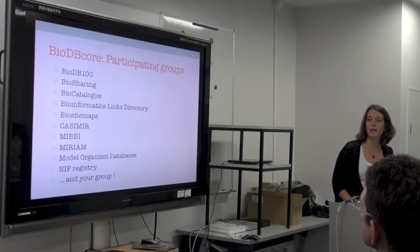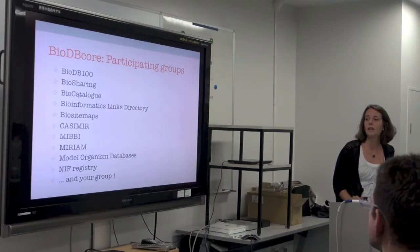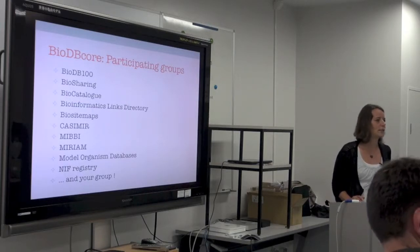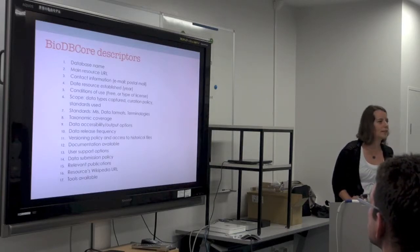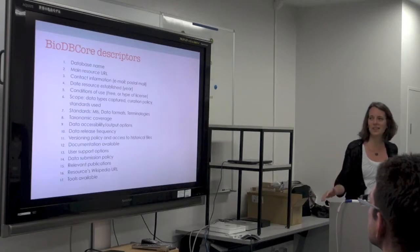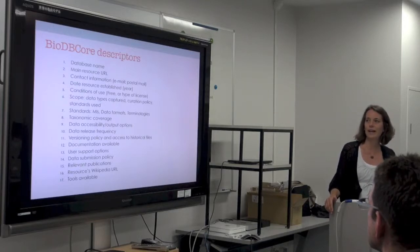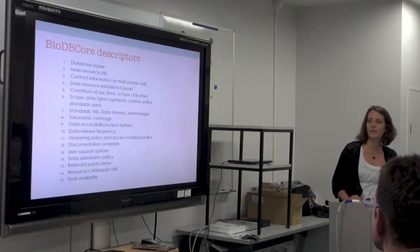These are the groups involved in BioDB Core: there's NIF, BioSiteMap, BioPortal, Casimir — which I think is now extinct — BBI, and Miriam, which is identifiers.org. We're really hoping to get as many groups as possible collaborating. The descriptors — you can look on the website — but essentially we're looking for some mandatory and some optional descriptors. You need to have a name, a main URL, contact information for updates, and conditions of use.